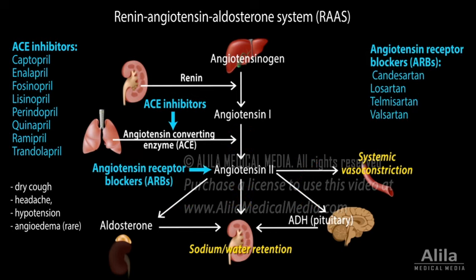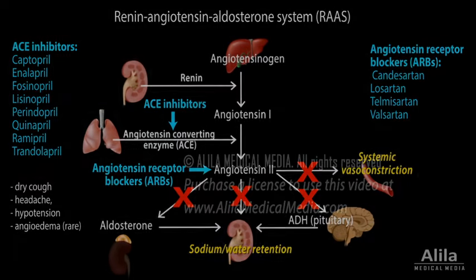Angiotensin receptor blockers (ARBs) inhibit the effect of angiotensin-2. Their mechanism of action is similar to that of ACE inhibitors, but they do not usually cause a cough. However, they are less effective and are typically used in patients who cannot tolerate ACE inhibitors.